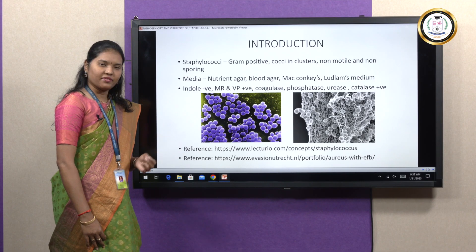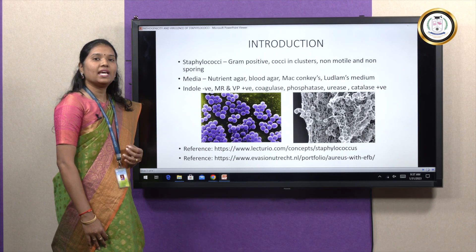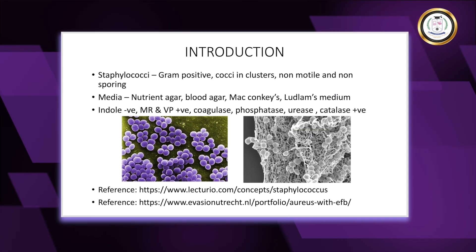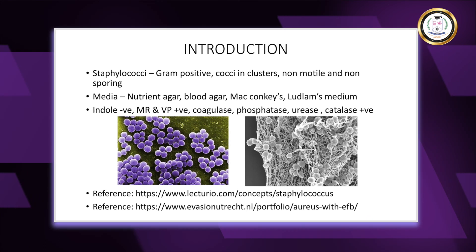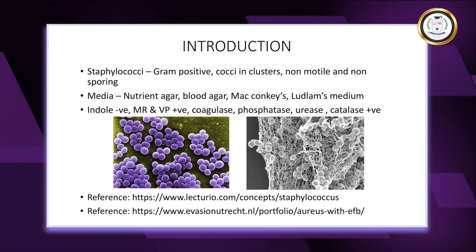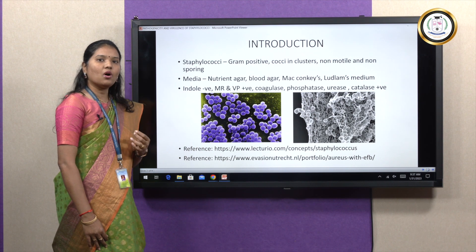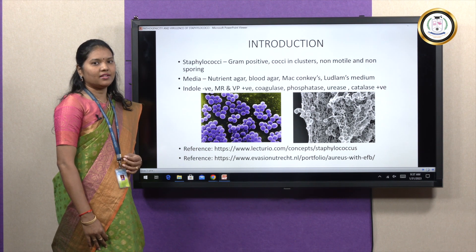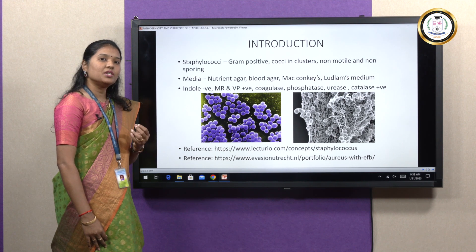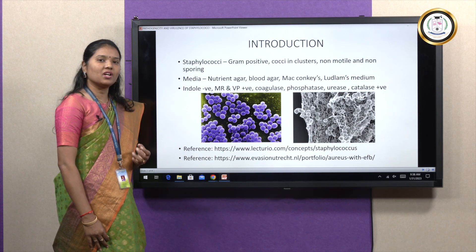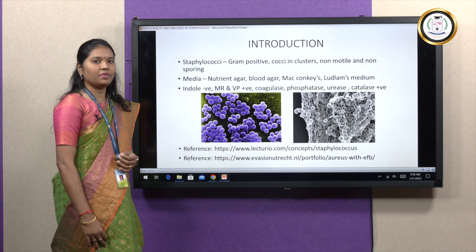Staphylococcus aureus produces yellow-colored pigments when plated on culture media. Coming to the cultural characteristics, Staphylococci does not require any special media for its growth; it can be grown on ordinary media like nutrient agar under optimal conditions. They are able to produce smooth, convex, opaque, shiny, translucent colonies on nutrient media.